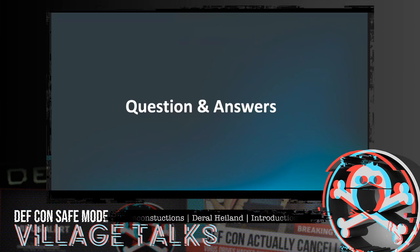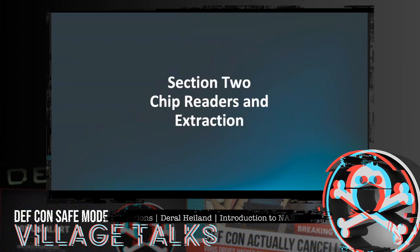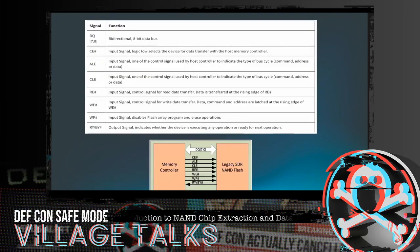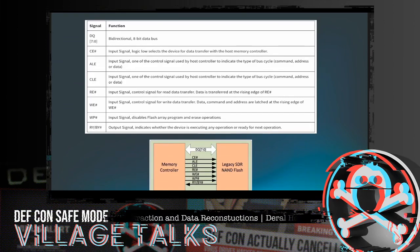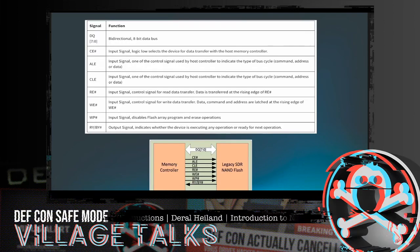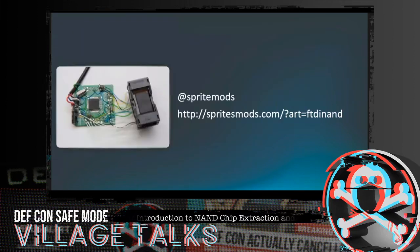Section two covers chip readers. Since I talked about chip off, let's get into chip readers. When you're interacting with a NAND flash chip, here are the signals you're typically going to need — everything from the 8-bit bidirectional data channel all the way down to input/output signal structure and various other pieces. If you buy an off-the-shelf chip reader, this solves all these problems.